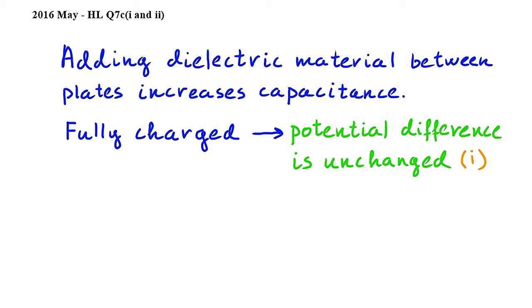In question part two, we will consider this equation from subtopic 11.3, where C is capacitance, Q is charge, and V is potential difference. From this equation, we can see that when capacitance increases while potential difference is unchanged, Q, the charge, will increase. This is the answer for question part two.